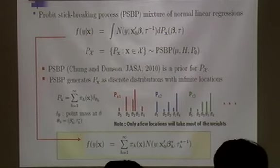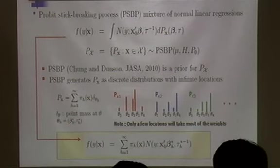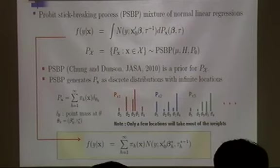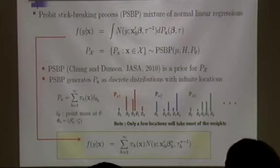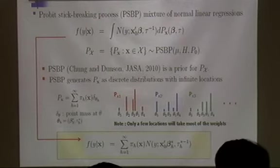In response to a question: the distributions P_x are not independent across different x values. They are correlated with each other because they are linked through the predictor. This PSBP mixture model gives a conditional density estimate as a predictor-dependent mixture of normal linear regression with a few components taking most of the weight, where the effective number of components is determined by the data.